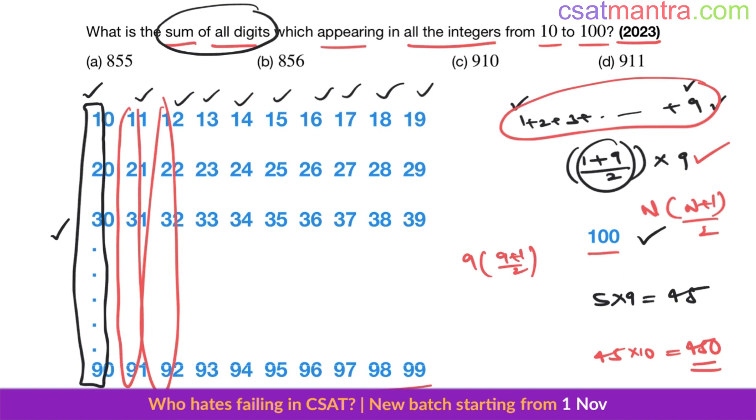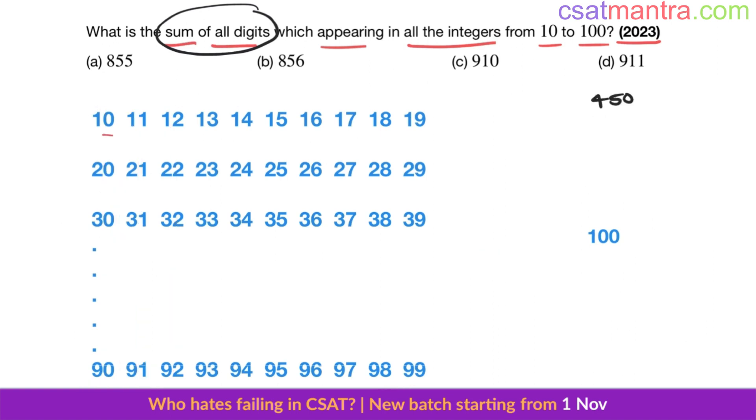Now sum of all the digits in units place, let's find out. There is a pattern of units digits as well: 0 to 9 in every row. Again, sum of terms in arithmetic series: first term, last term by 2. How many terms are there? 10 terms. 9 by 2 into 10—45.